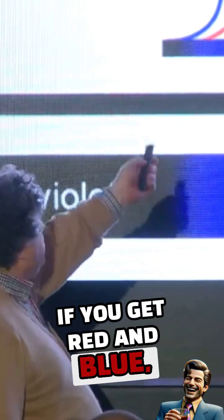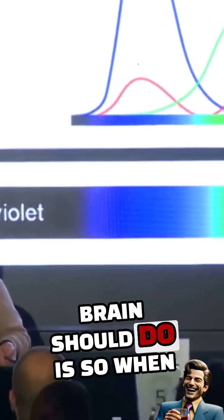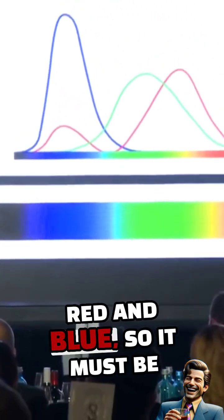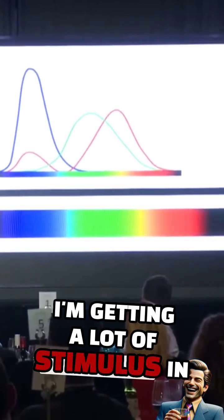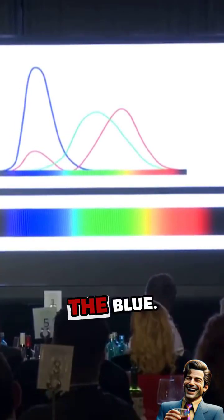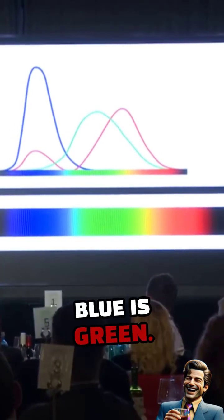So what happens is that if you get red and blue... Now, normally what the brain should do is say, well, it's halfway between red and blue, so it must be green. I'm getting a lot of stimulus in the red, I'm getting quite a bit in the blue. Halfway between red and blue is green.